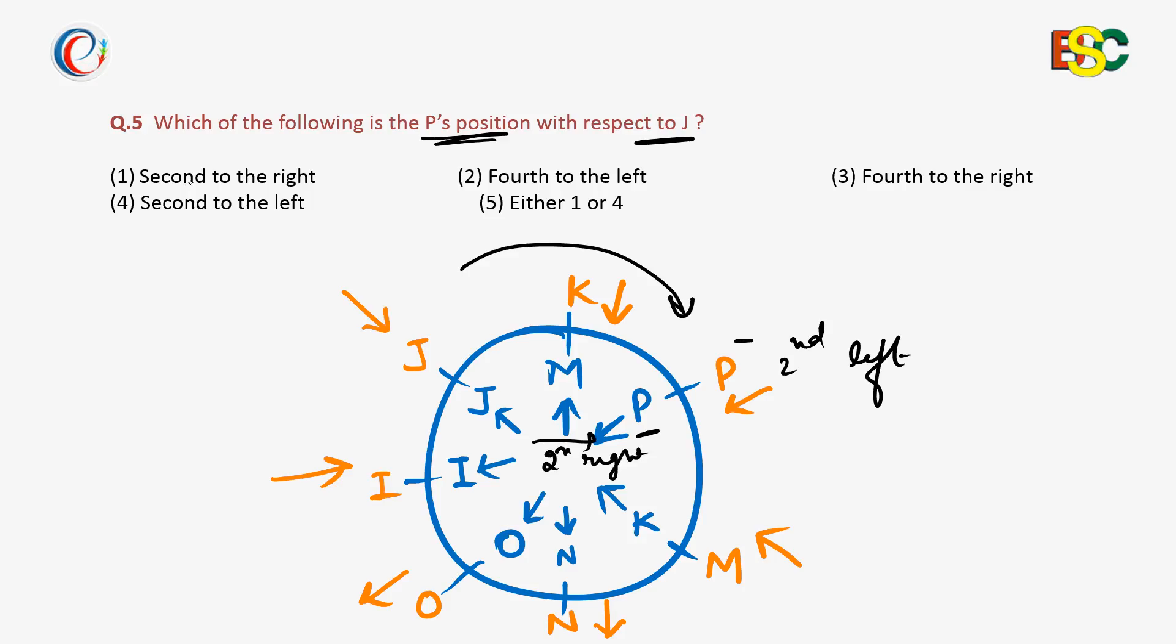So, there is one option that is second to the right. But wait a second, this is not the correct answer because there is also one option which says second to the left. And one option says either 1 or 4 which is the correct answer. Option 5 is the correct answer to this question.